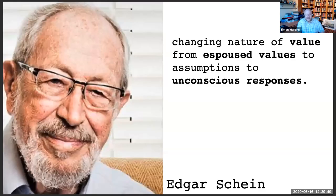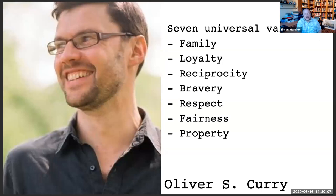I knew that values weren't constant. Edgar Schein talked about the changing nature of values — from espoused values to assumptions to unconscious responses. Oliver Curry had talked about seven universal values: things like family, loyalty, reciprocity, bravery, respect, fairness, and property. These are values which have become accepted in most collectives or organizations.